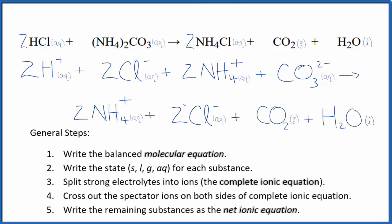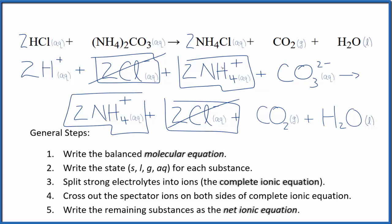Now we can cross out spectator ions—they're on both sides, so in the reactants on the top and products on the bottom. In the reactants, I have two chloride ions right here; these are spectator ions, I'm going to cross those out. Two ammonium ions in the reactants and two ammonium ions in the products—spectator ions, we cross those out.